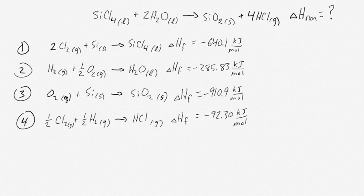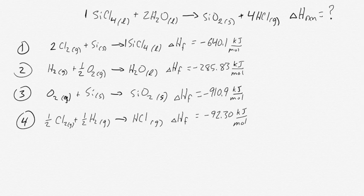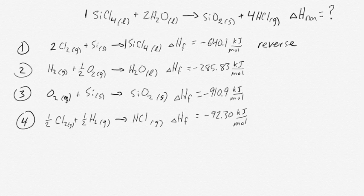Now that we've got our numbered equations, we have to decide how to rearrange them to best suit our purposes — adding them together to get the overall equation. SiCl4 in the overall equation shows up as a reactant, and there is one of them. We have one SiCl4 in our individual equation, but it's a product, so we have to reverse that reaction. And that means reversing the delta H as well.